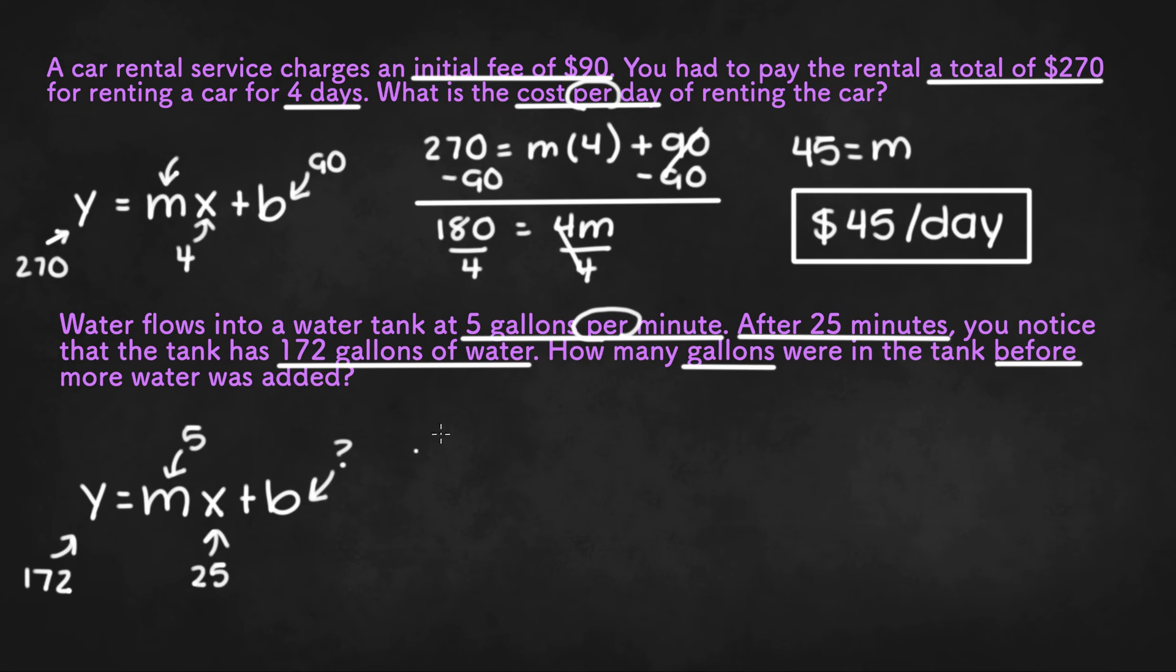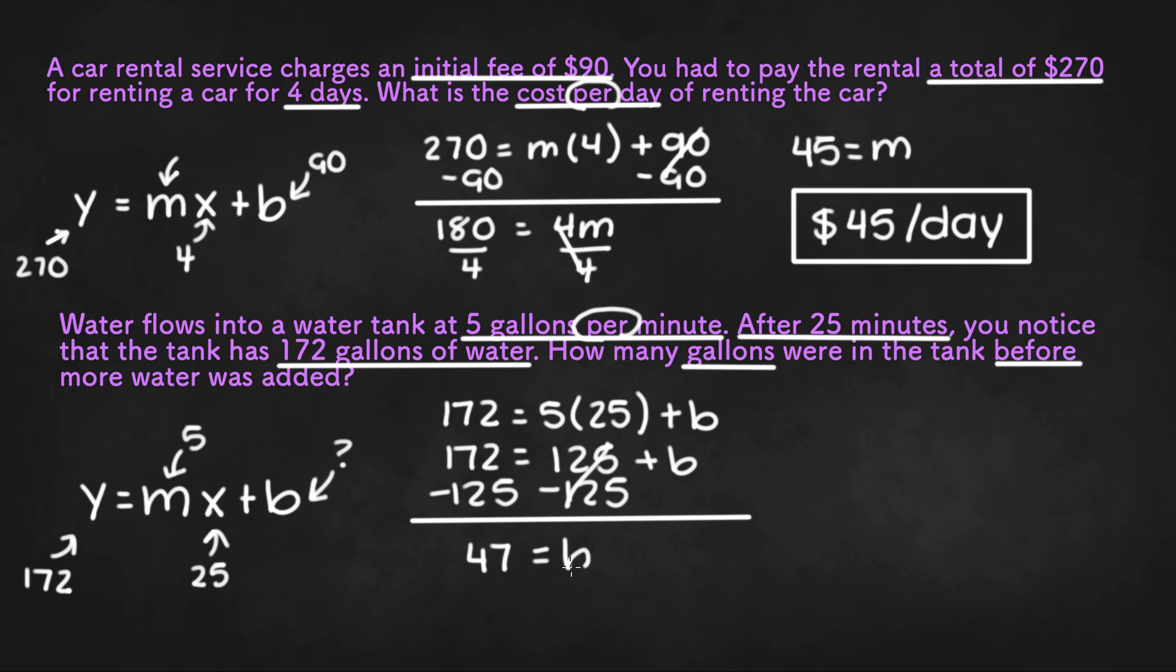So let's plug in the numbers into the equation. We have 172 equals 5 times 25 plus b. If we multiply 5 times 25, we get 125. And we can subtract 125 from both sides to isolate b. So once we do that, we're left with 172 minus 125, or 47 equals b.